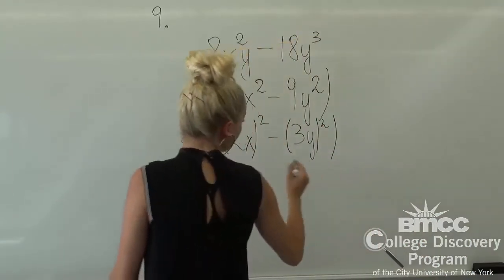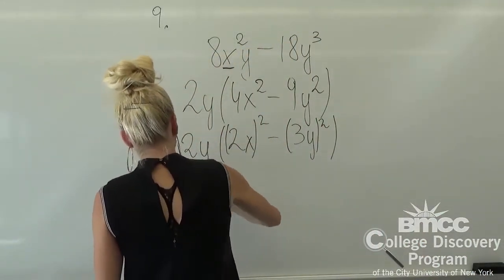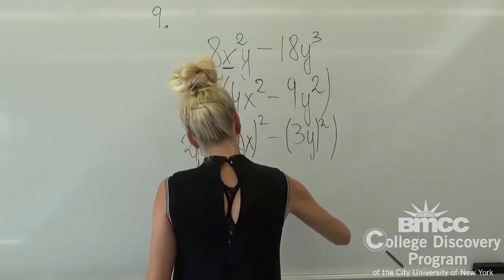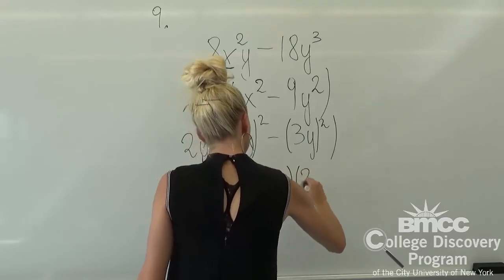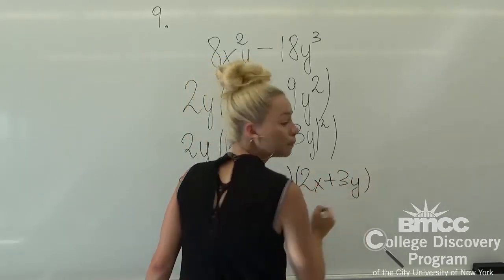And right now, we can see over here that we have perfect squares, so we're going to rewrite it as (2x - 3y) times (2x + 3y). Thank you.